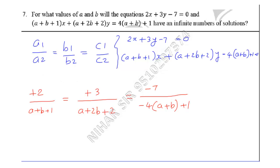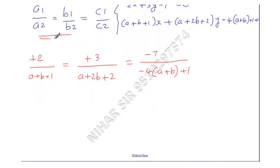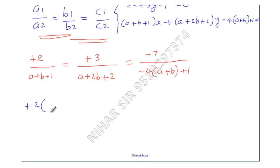We will take A1/A2 = B1/B2 and B1/B2 = C1/C2 to get two equations and then solve them. First, taking A1/A2 = B1/B2: 2 × (A+2B+2) = 3 × (A+B+1).